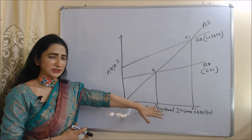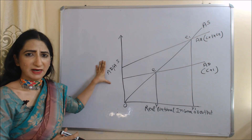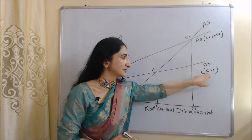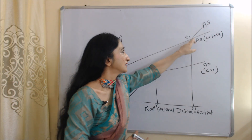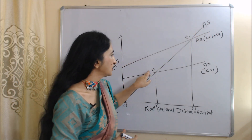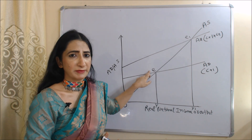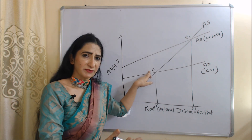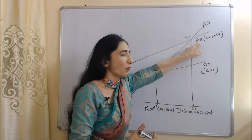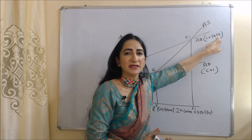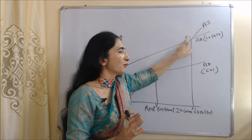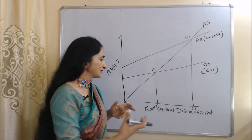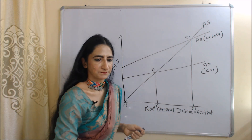In this diagram, the x-axis shows real national income or output and the y-axis shows aggregate demand and aggregate supply. The AD curve represents aggregate demand (C plus I) and the AS curve represents aggregate supply. E is the initial equilibrium point, but it is not the full employment point. As the government intervenes and invests, the aggregate demand curve shifts from AD to AD1, now including G (government expenditure). The new equilibrium E1 is the full employment point, where national income increases from OI to OI1.